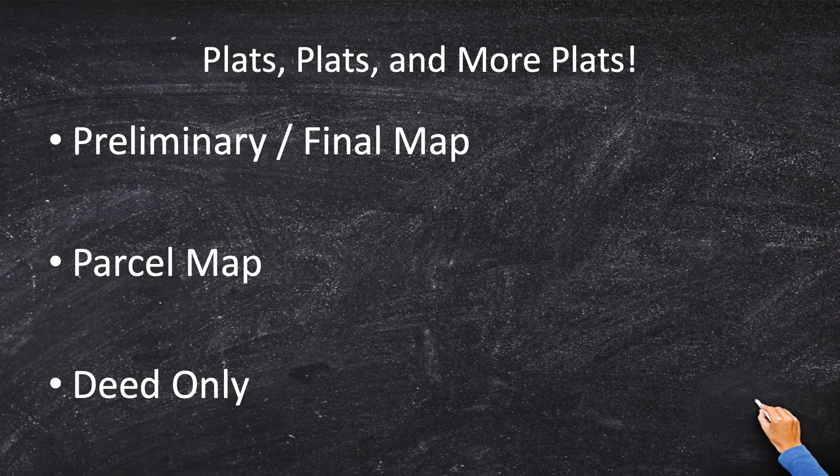We can do a deed — basically write a metes and bounds description for each of those lots, file it with the courthouse, and make the lots. Fifty to one hundred years ago, this is how a lot of subdivisions were made, but not today. Second, we have a parcel map. A parcel map is like a final map junior — it has less requirements, less details. It's a very basic subdivision map. If it's a small subdivision that does not require any kind of new roads, parcel maps will be just fine.